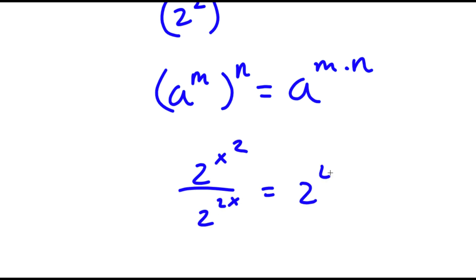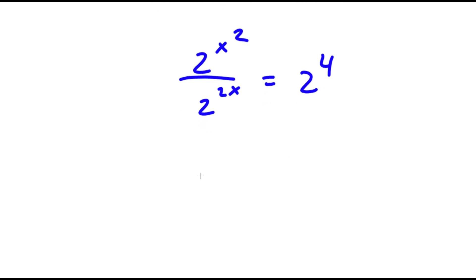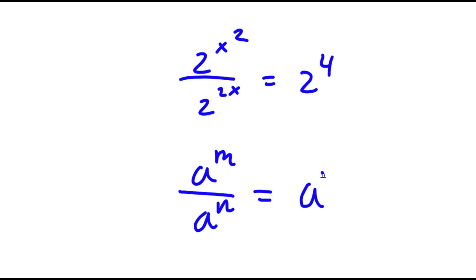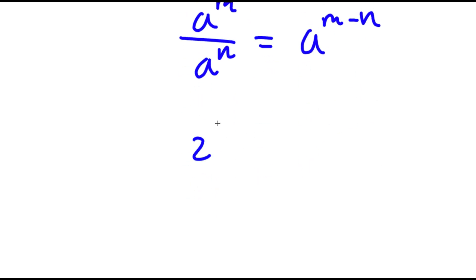This is equal to 2 to the power of 4. Now if I have something in the form a to the power of m over a to the power of n, this is equal to a to the power of m minus n. So now I have 2 to the power of x squared minus 2x is equal to 2 to the power of 4.